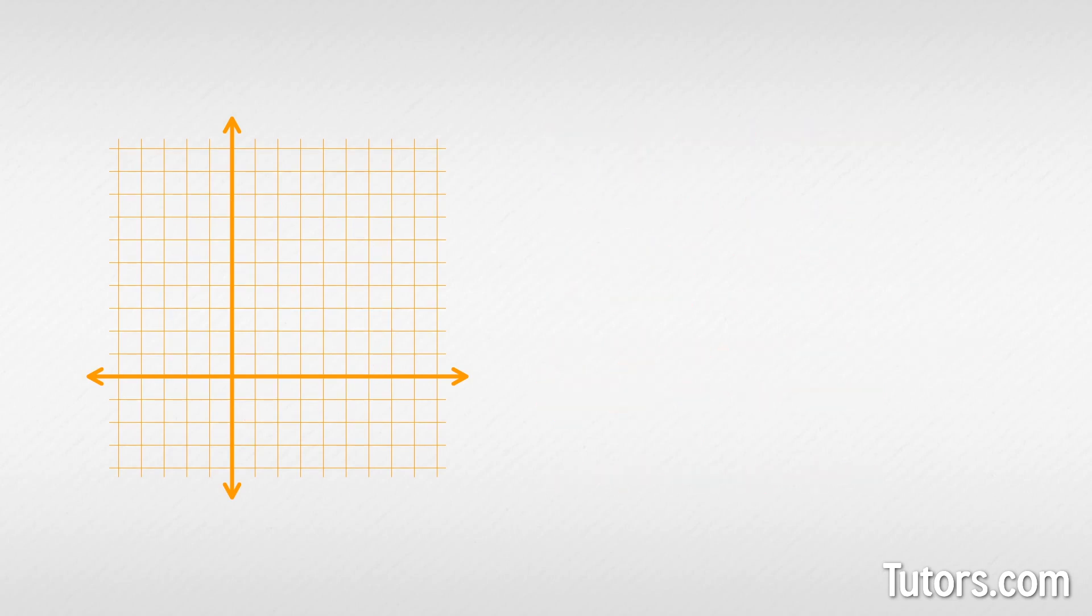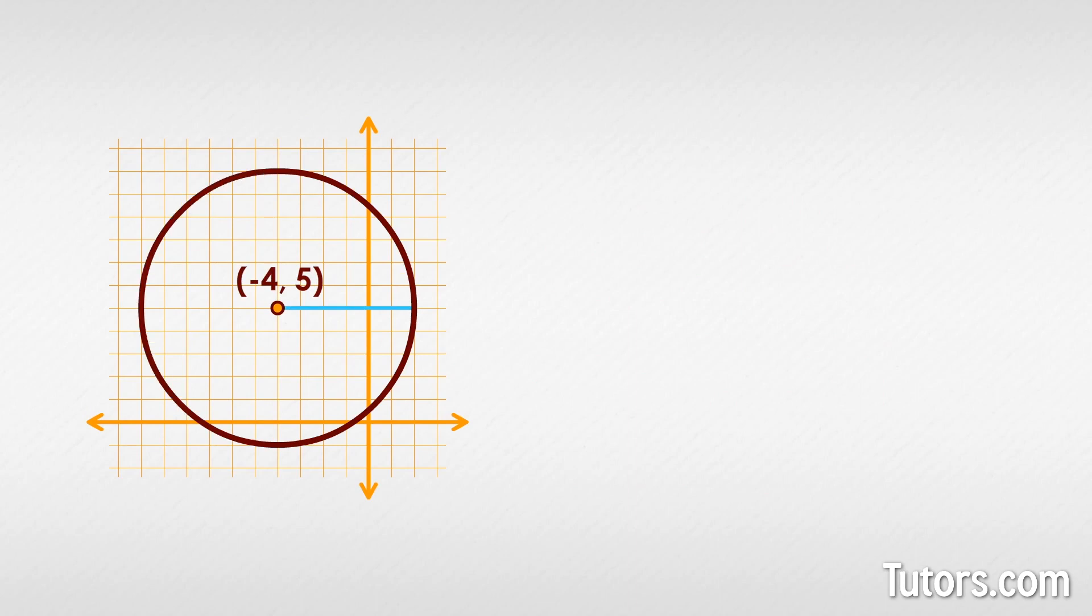Let's do one more example. Choose between standard form and general form based on the information you have in the problem. Here is some information about a circle. Which method will you choose? We know the center, negative 4, 5, and the radius, r equals 6. Start with the standard form,